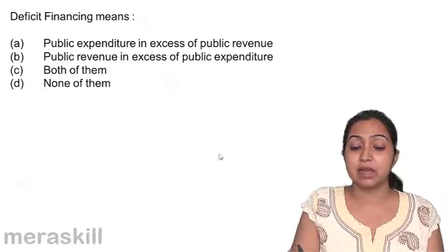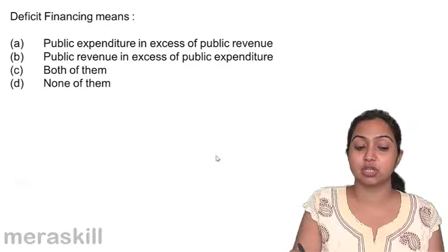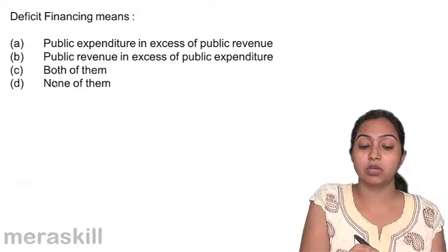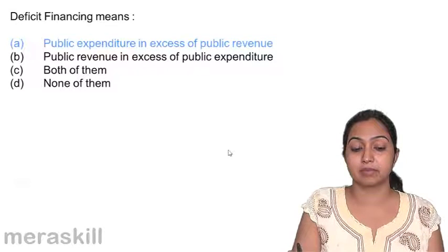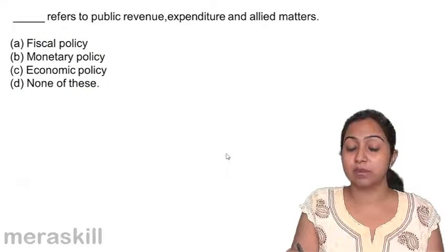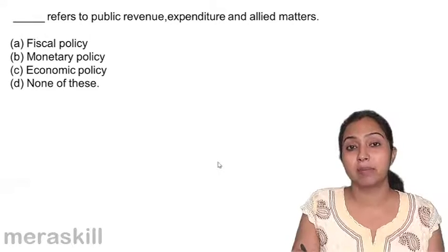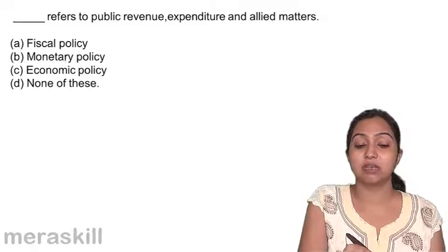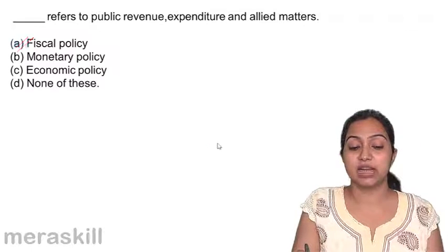Deficit financing means public expenditure in excess of public revenue. When your public expenditure is more, you want to finance it through deficit financing. Fiscal policy refers to public revenue, expenditure, and allied matters. Fiscal policy is all about public revenue, public debt, and public expenditure.